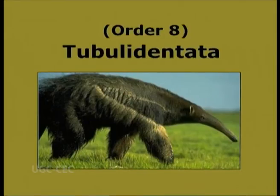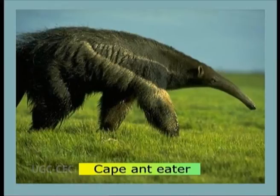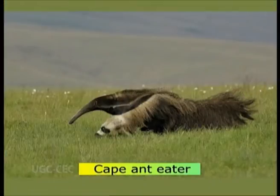Order 8: Tubulidentata. Tubulus meaning tube-like, dens meaning tooth. The tongue is slender and protrusible. No canines or incisors are present. Each jaw with four to five teeth lacking enamel, perforated by numerous fine tubules of pulp. Example: single genus of pig-like Cape Anteater of South Africa.